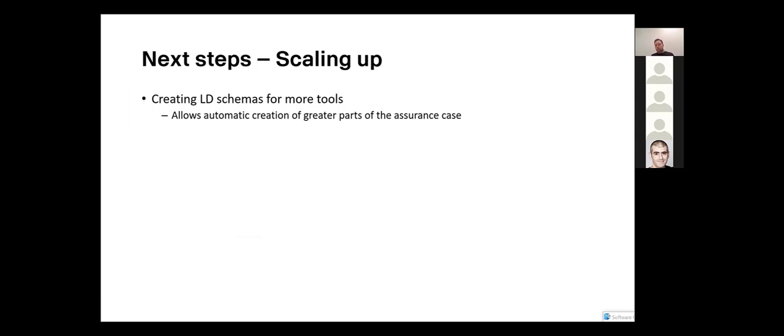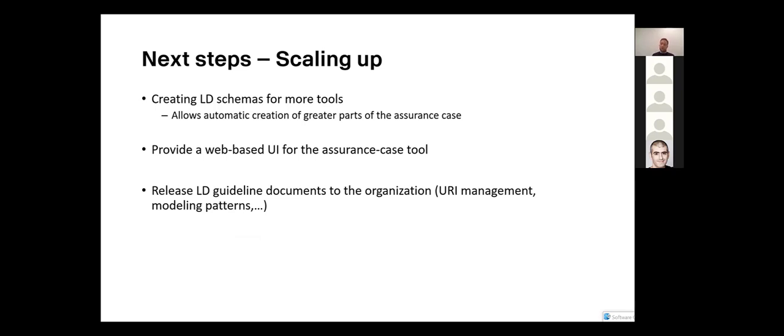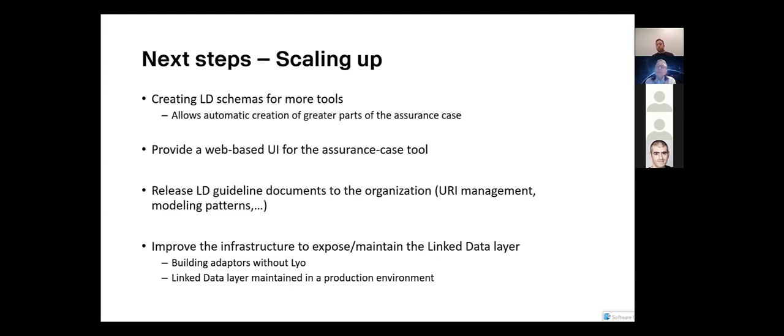So next steps, we're currently trying to scale up. We're continuously working on creating more linked data schemas for more tools in order to automate more parts of the assurance case creation. And we're also working on creating a web-based UI for this assurance case tool. Something we work a lot on is different kinds of guideline documents. Since we have our own domains, so to say, and we do not use OSLC domain specifications, we spend a lot of time defining, okay, how does version management work? How do you manage your IDs? What are the modeling patterns that we use for the linked data schemas? And since lately, we also work on the infrastructure to expose and maintain the linked data layer. We're considering building adapters without Leo for the tools that, for example, don't like Java and actually slowly getting to a point where this linked data information layer exists in a production environment that you can use for real.